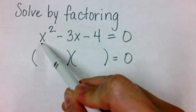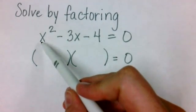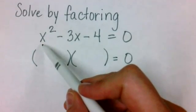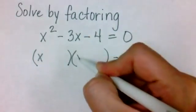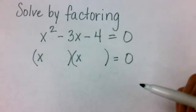First, we look at the term with the variable squared and ask ourselves, what times what would give me x²? That would have to be x and x. Notice that I put them in the first position of each of the parentheses.